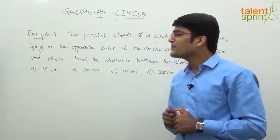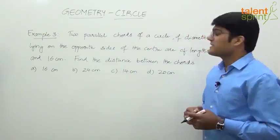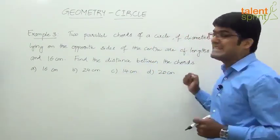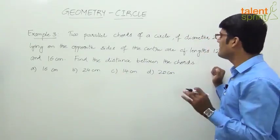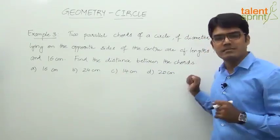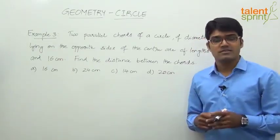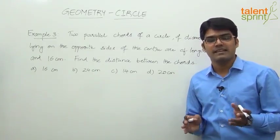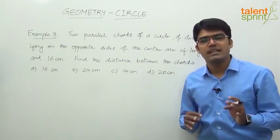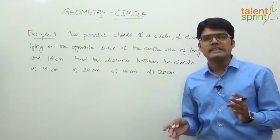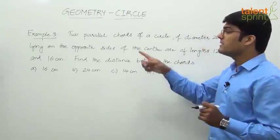Let us now look at Example 3. The question says: two parallel chords of a circle of diameter 20 centimeters lying on the opposite sides of the center are of lengths 12 centimeters and 16 centimeters. Find the distance between the chords. So this time we have two chords, unlike Examples 1 and 2 where there was only one chord. Now we have to find the distance between the two chords.